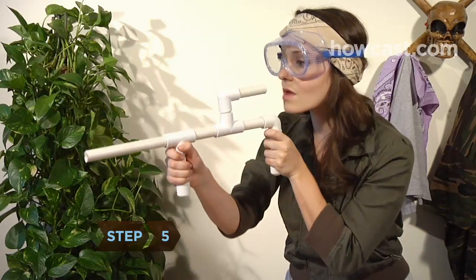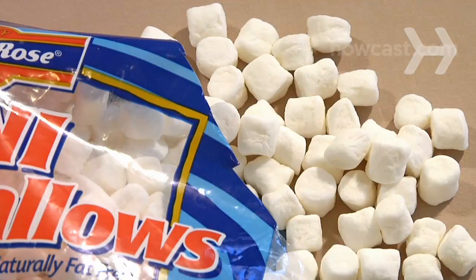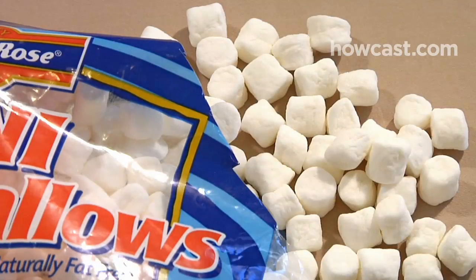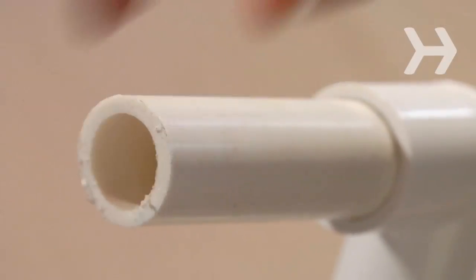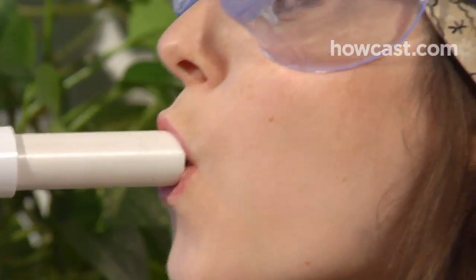Step 5. Go shooting. Put on eye protection, point the gun in a safe direction, and load a mini marshmallow into the mouthpiece. Wrap your lips around the mouthpiece and blow to give the gun a quick burst of air.